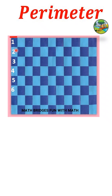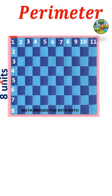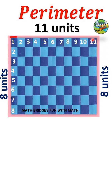Count the boxes vertically: 1, 2, 3, 4, 5, 6, 7, 8 boxes — so vertically it is 8 units, and therefore the opposite side is also 8 units. Now count horizontally: 1, 2, 3 ... up to 11 — so it is 11 units horizontally, and the opposite side is also 11 units.